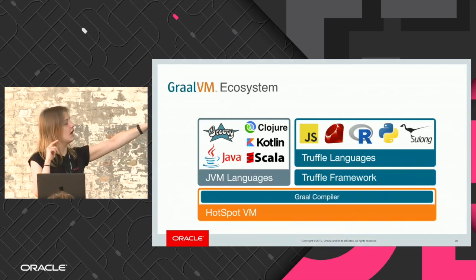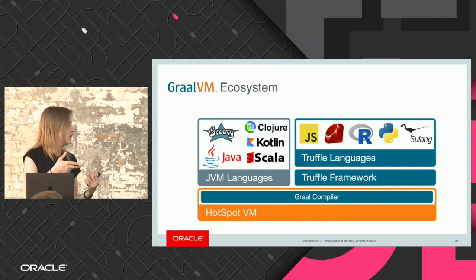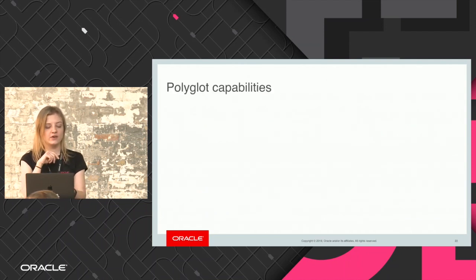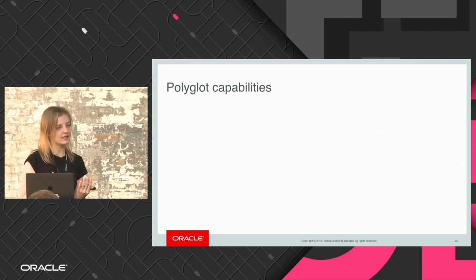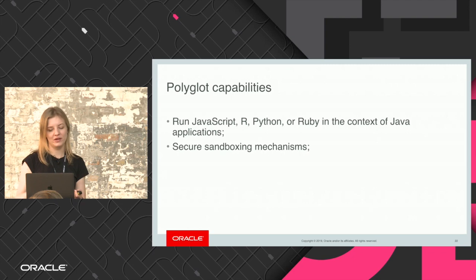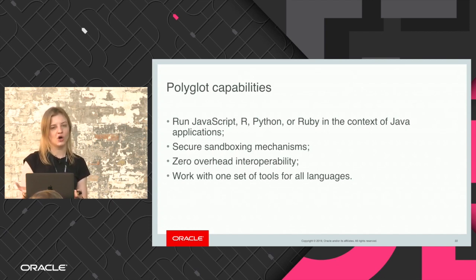All of the languages you see above are implemented with our language implementation API, and things like Java and JVM we can run just with the HotSpot VM and Graal compiler bond. GraalVM can run polyglot programs in an efficient way — things like Java, JavaScript, R, Python, and Ruby all in the context of a Java application. It gives you all the things you are used to, like sandboxing mechanisms, and also offers zero overhead interops so that your applications keep on being performant.